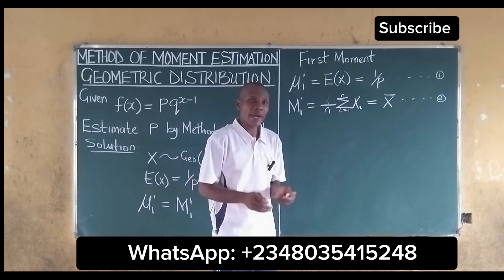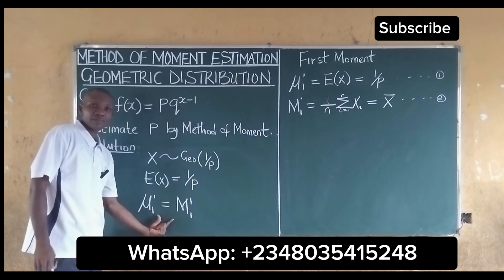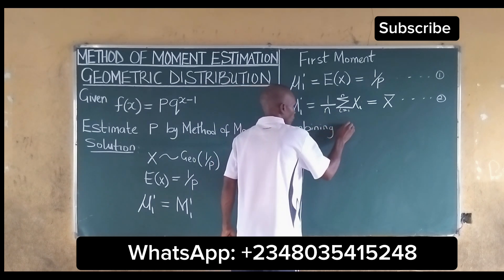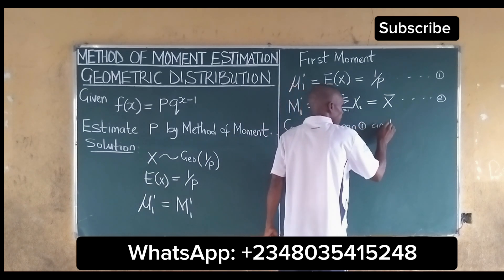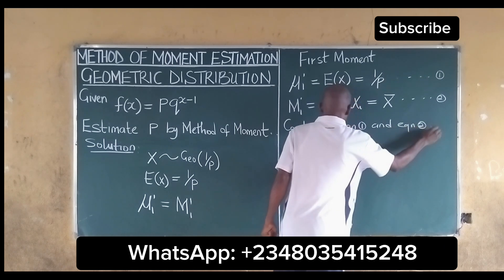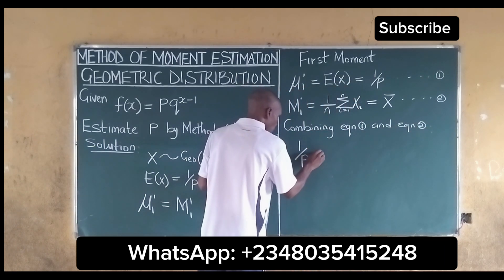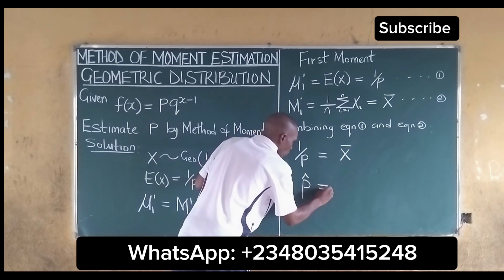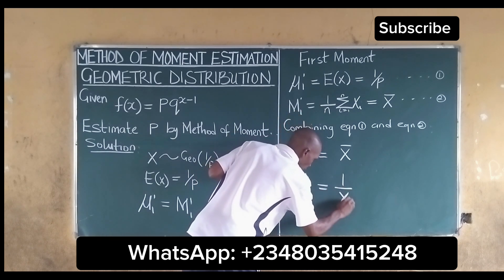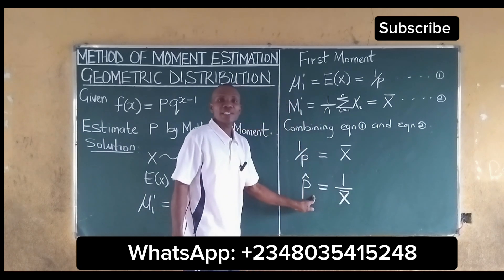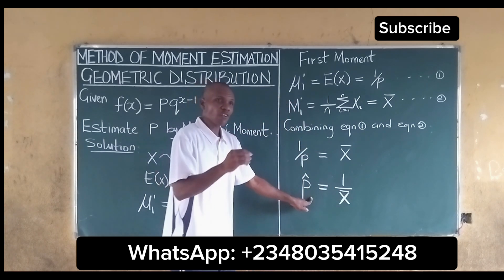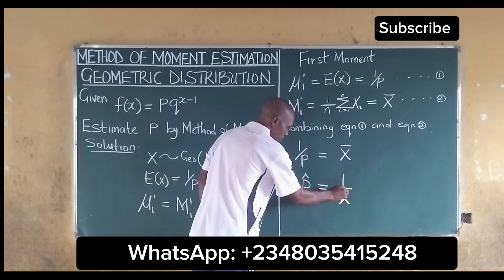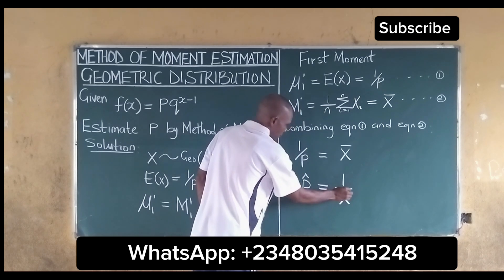The next thing to do to get the estimate of p is to combine equation one and equation two. Combining equation one and equation two, we get 1 over p equal to x-bar. It then means that our estimate of p is equal to 1 over x-bar, meaning p is estimated. So our p estimate for the method of moments for the geometric distribution is equal to 1 over x-bar, which is the sample mean.